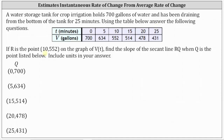First, if R is the point (10, 552), which is from this column in the table where 10 is the number of minutes and 552 is the volume in gallons, we're asked to find the slope of the secant line RQ when Q is the point listed below. The point R is going to remain (10, 552), while point Q will change based upon the ordered pair given.